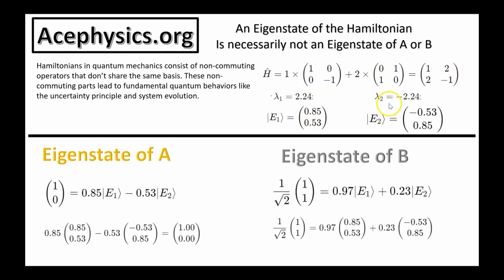This matrix has eigenvalues lambda 1 and lambda 2, and eigenvectors E1 and E2. If I make a measurement of the eigenstate of matrix A — for example, spin along the z-direction — it's not an eigenstate of the Hamiltonian. This means that a measurement of A necessarily places the system into a superposition of two energy eigenstates in a linear combination. Similarly, when you measure the eigenstate of matrix B, for example spin along the x-axis, the system is also placed in a linear combination of energy eigenstates, but in a different combination than with A. This illustrates how different measurements lead to distinct superpositions of energy eigenstates, reflecting the non-commuting nature of these operators.